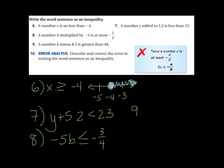Number 9. A number k minus 8.3, that's nice and straightforward, is greater than 48. Well, that's good. That's easy. So when it literally has the words is greater than, you know which direction it's supposed to go.